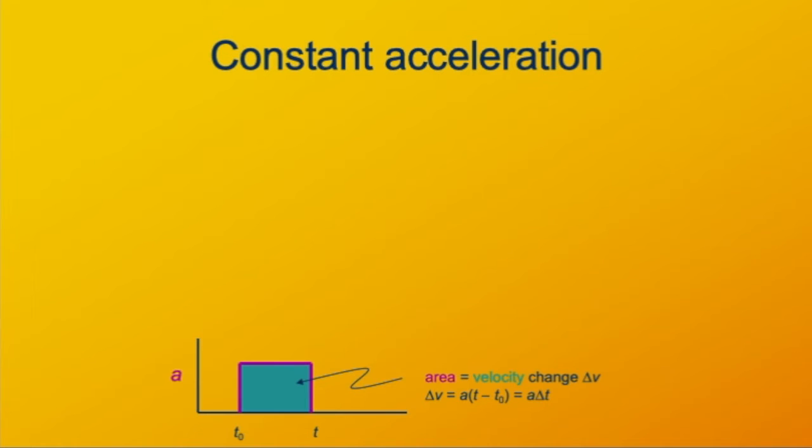So here, this acceleration-time graph, because it's constant acceleration, is just a rectangle. So the velocity change Δv is the height a times the width Δt.